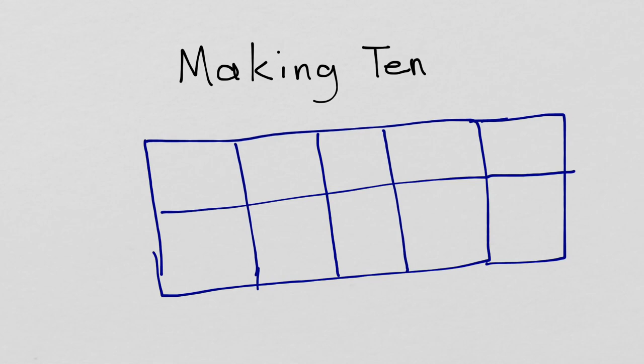Making ten problems are basically, in a variety of different disguises, going to ask this. If I have, say, four of something, how many more would I need to make ten? So, in the ten frame, you'll notice I've filled in from left to right across the top. This would be the next box I fill, then I go to the second row.